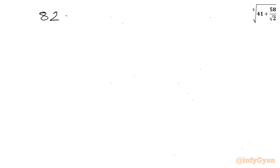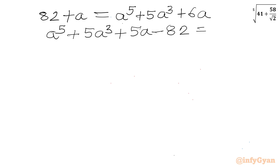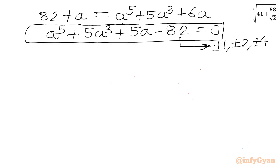Writing 82 plus a on the left and a to the power 5 plus 5a cube plus 6a on the right, taking all terms to the right-hand side gives the quintic equation: a to the power 5 plus 5a cube plus 5a minus 82 equals 0. We can solve this using the Rational Root Theorem and Synthetic Division. The eligible factors of 82 are plus or minus 1, plus or minus 2, plus or minus 41, plus or minus 82.